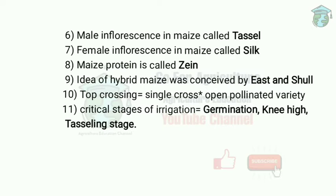In maize, a very important crossing is called top crossing. In this, a single cross (A × B) is crossed with an open-pollinated variety (C). Top crossing is used for testing the general combining ability (GCA) of inbred lines.